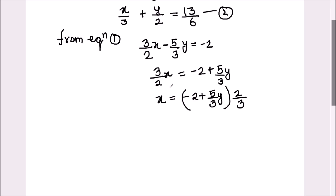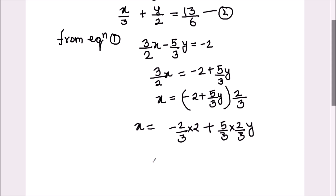Here it is 3 upon 2, so when we transpose it, it will be 2 upon 3. Now we will multiply 2 upon 3 by both the terms: 2 plus 5 upon 3, times 2 upon 3y. This gives minus 4 upon 3 plus 10 upon 9y. That's the value of x.